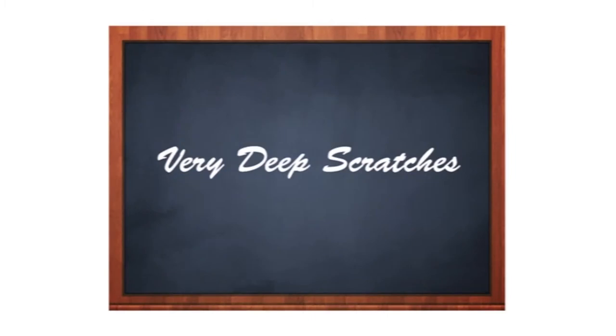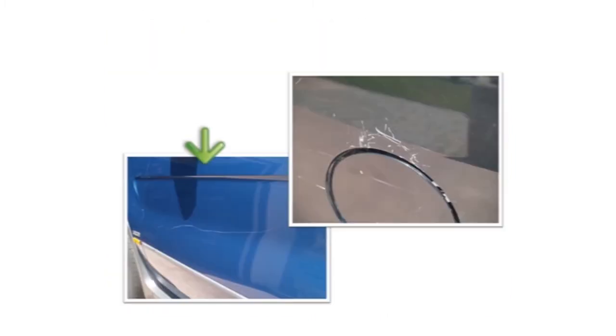So let's talk about very deep scratch. Now, here on this blue car, we've got the typical key scratch, shopping cart basket, who knows, a kid with a bicycle.